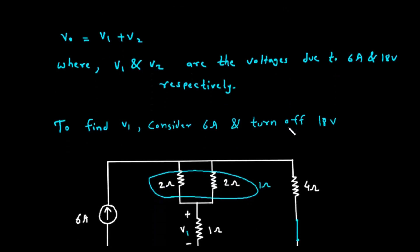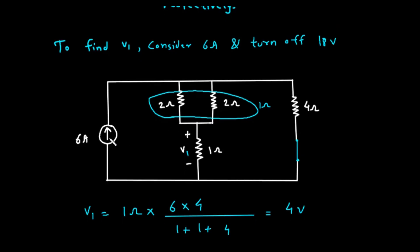Our first step is to find V1. To do this, we keep the 6-amp current source active and turn off the 18-volt voltage source. This brings up a very important rule: how do we turn off a source? To turn off a voltage source, we set its voltage to zero. A component with zero volts across it is a perfect wire, also known as a short circuit. So we will replace the 18-volt source with a simple straight line or wire. To turn off a current source, we set its current to zero — that becomes an open circuit, which we'll see in the next step. For calculating V1, we redraw our circuit: the 6-amp source stays, but the 18-volt source is replaced by a wire.